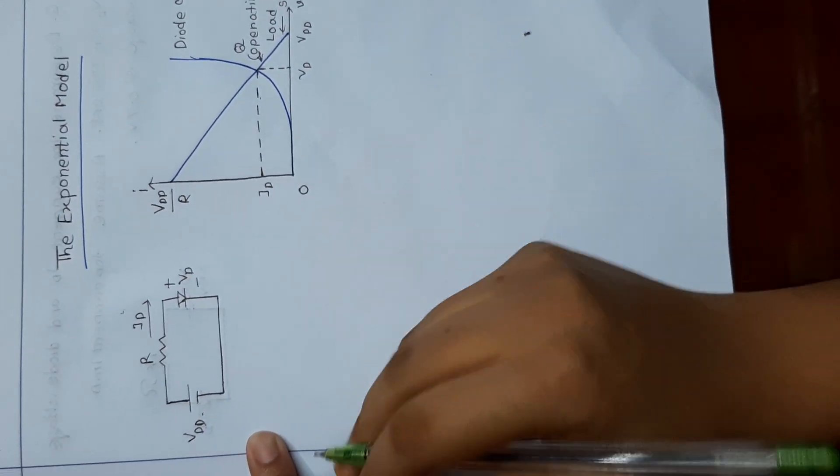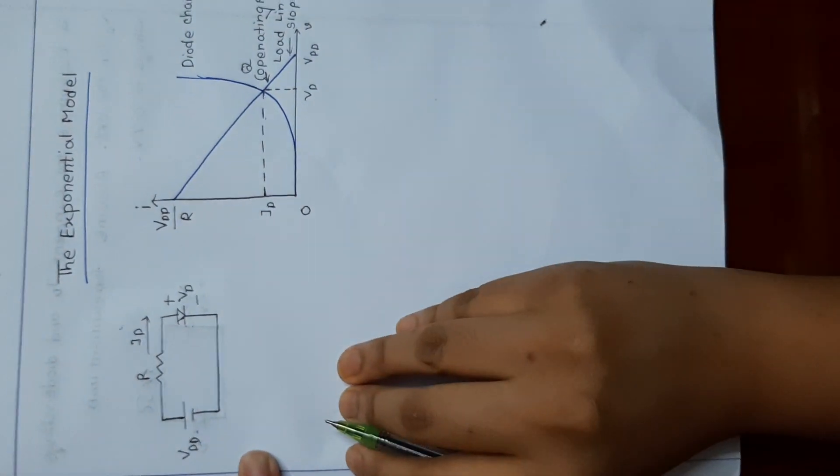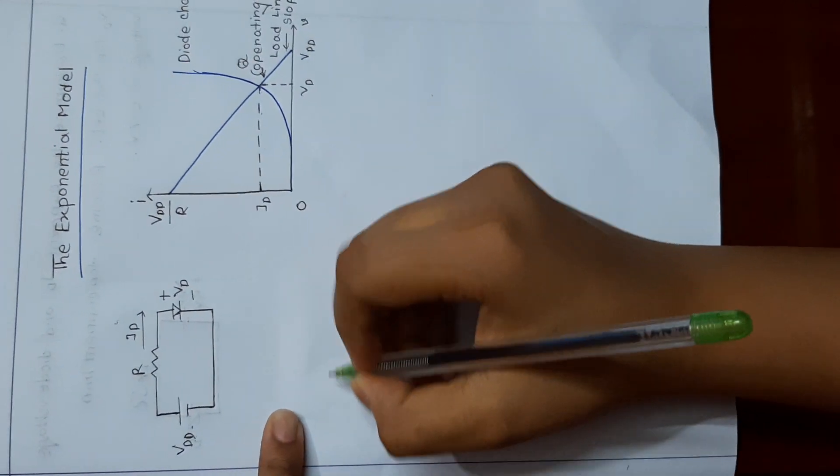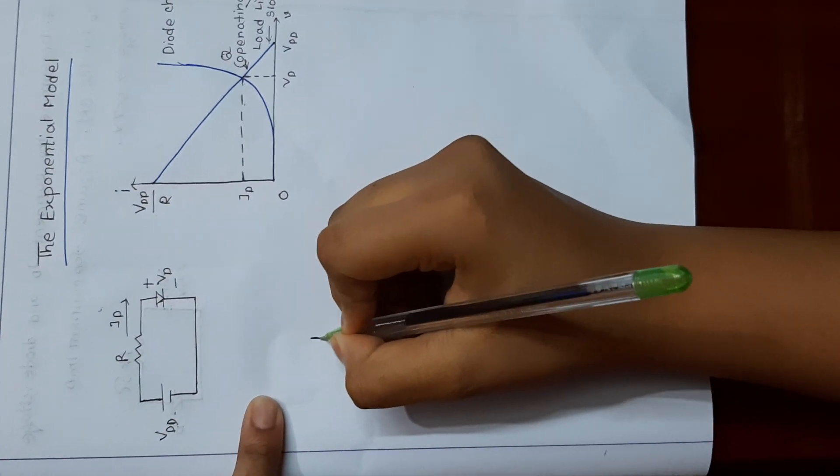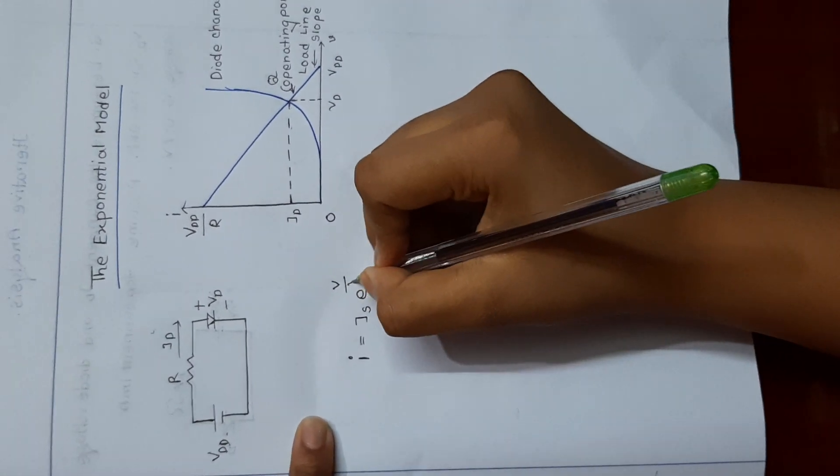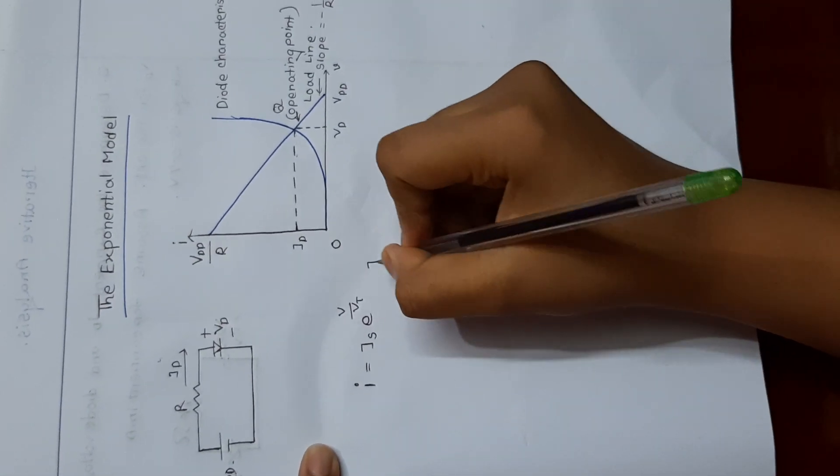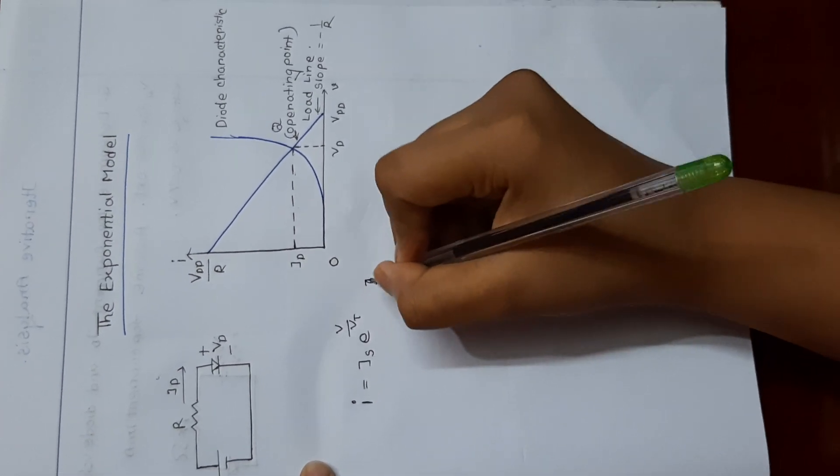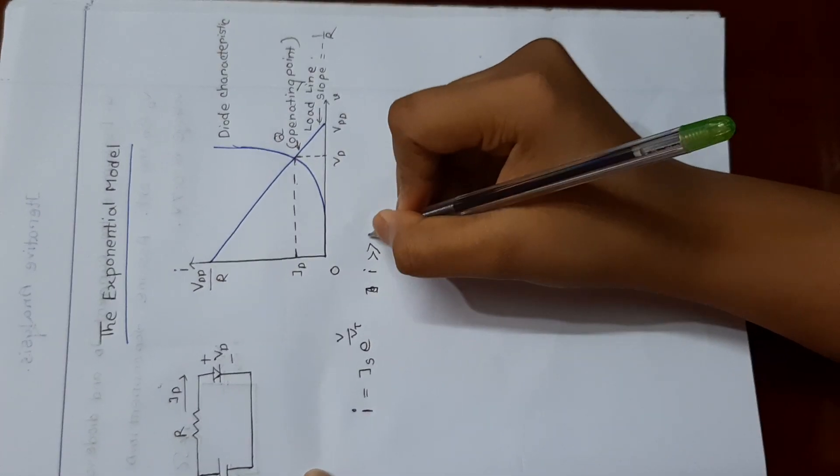We can find from the forward bias region, the exponential model can be like this: I is equal to Is into e to the power V by Vt, when I is much, much bigger than Is.